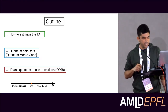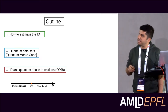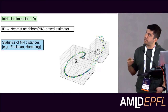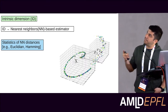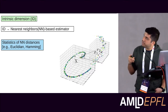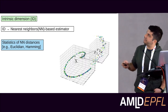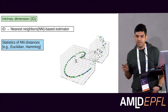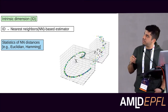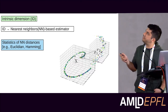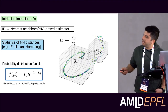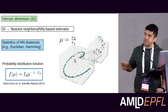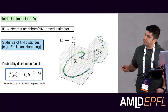Estimating intrinsic dimension is a field by itself and not a trivial task. We use an estimator from the family of nearest-neighbor-based estimators. The basic idea is that intrinsic dimension is related to the statistics of nearest-neighbor distances in configuration space. For each point in the data set, we compute the first and second nearest-neighbor distances.